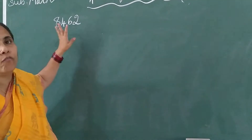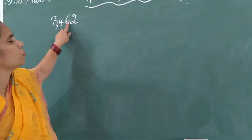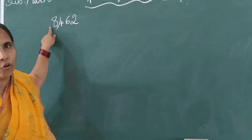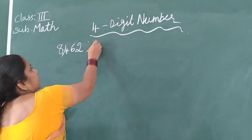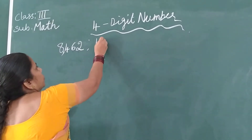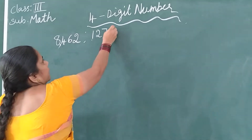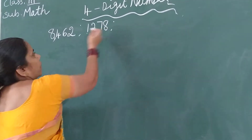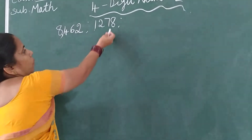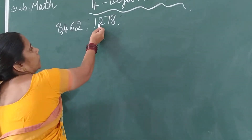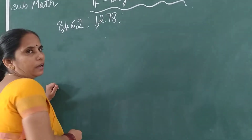This is the 4-digit number — 1, 2, 3, 4. One more example: 1, 2, 7 and 8. Here, where must you put the comma? Count 1, 2, 3 from the right — after 3 digits you will put the comma.